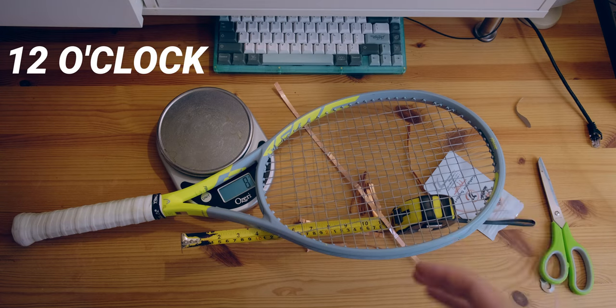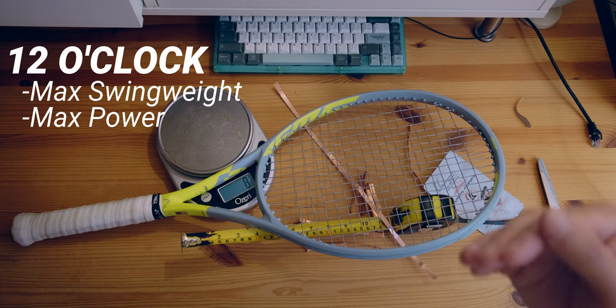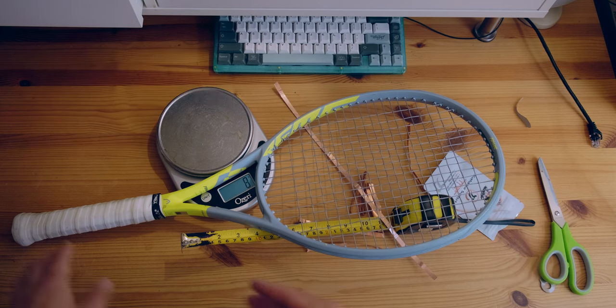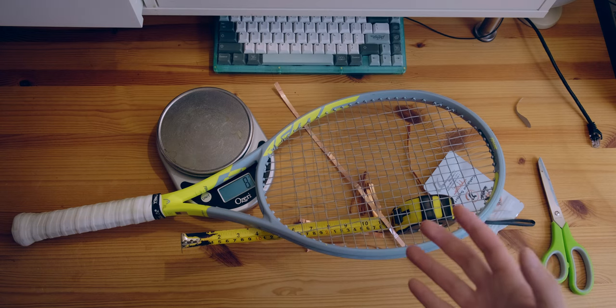If you add the lead at 12, that's going to have the highest effect on swing weight and increase your power the most. The further away from the handle that you place the lead, the higher effect it's going to have on that swing weight.